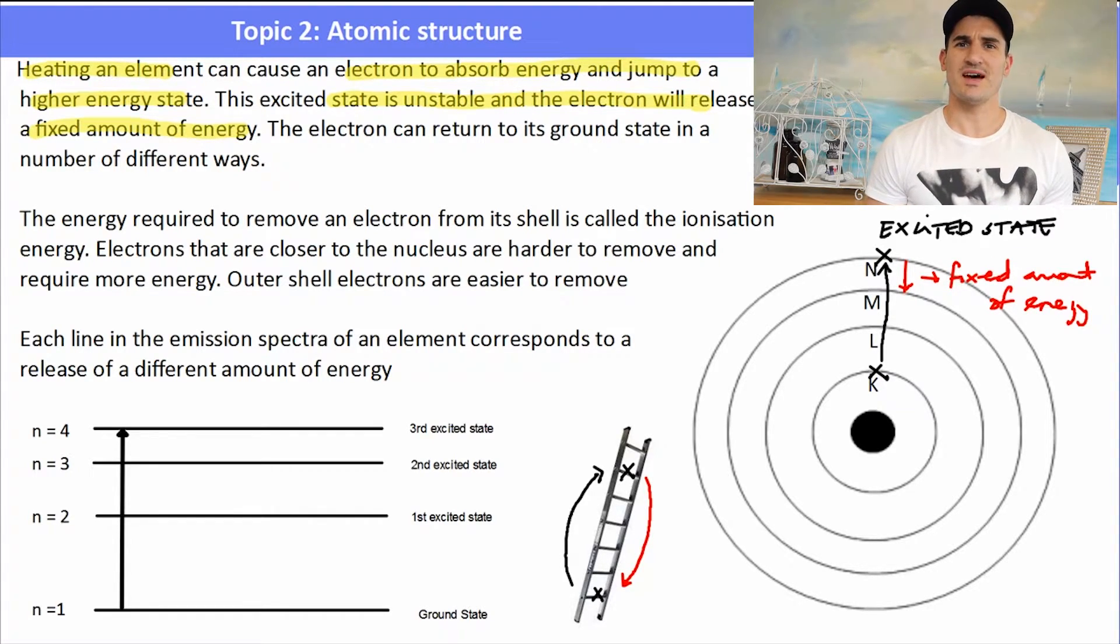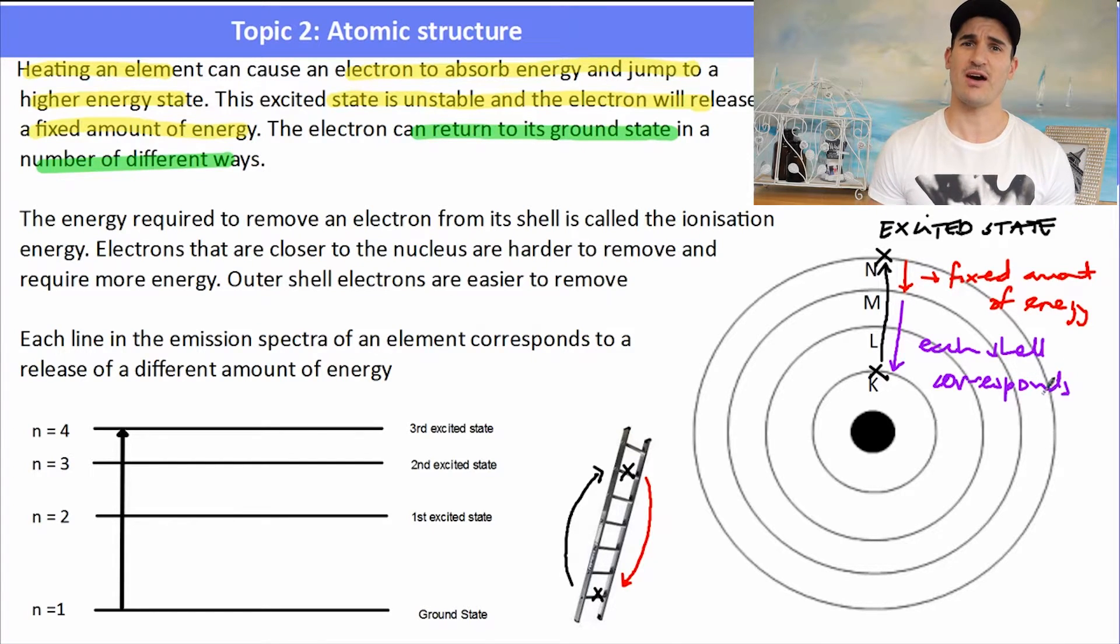It depends on the number of different ways that this electron can return to its ground state, and that is what produces all of the colors. A bigger jump would produce more of a violet or blue type color. A smaller jump will produce more of a red. Once we get shells that are a long way away, we get very small energies which our eyes might not even be able to see. Each shell corresponds to a different amount of energy released.